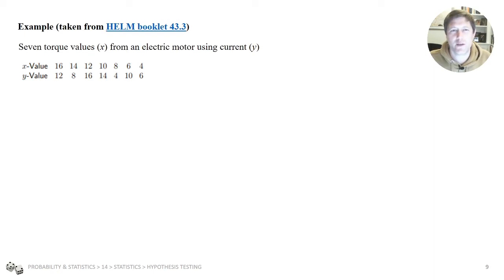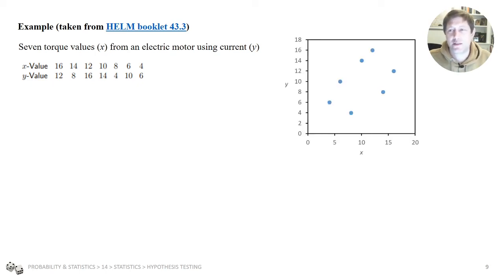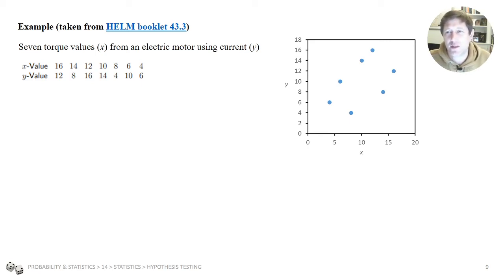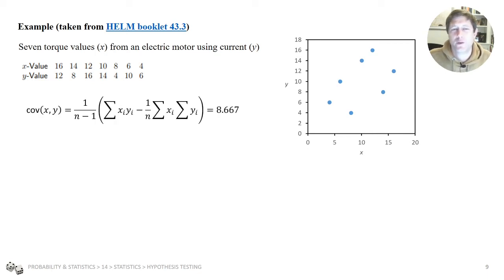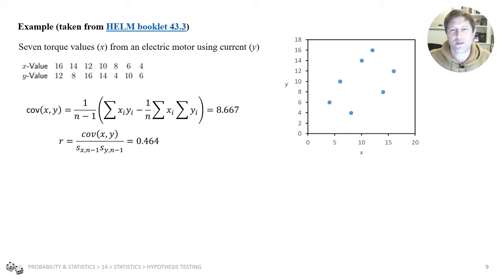Here's an example from a HELM booklet. We have seven torque values from an electric motor and the current it uses, looking at how torque relates to current. Plotting the data, we calculate the covariance — which has a positive value — and then the correlation coefficient, which comes out at 0.464. It's between minus one and one, not zero, suggesting there might be a correlation, but it's not very close to one either. How do we judge that?